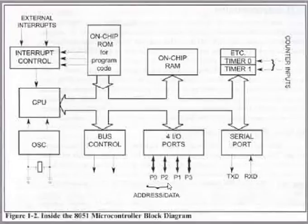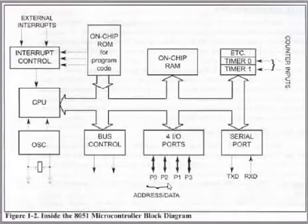A microprocessor is a standalone CPU chip where memory and input/output ports can be custom designed and expanded. A microcontroller is a chip that has a CPU, memory, and input/output ports built in, and they can be expanded or compressed according to our requirement.